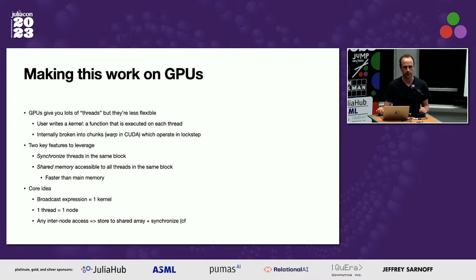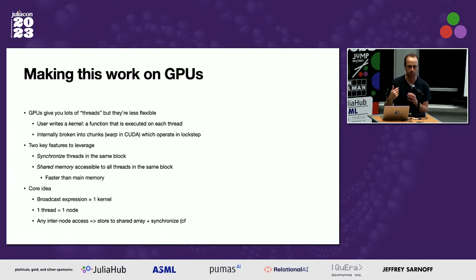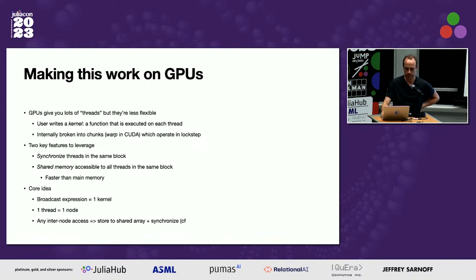There are two key features we can leverage. First, we can synchronize threads — synchronize all threads within a block. Second, we have access to shared memory: memory accessible to all threads in a block, faster than main memory, a temporary scratch space that is actually shared. The core idea is: a broadcast expression becomes a single CUDA kernel — matching how CuArray broadcasting typically works. We use one thread per node within each element. Whenever we have any inter-node access — like a matrix multiply — we store all the inputs to shared memory, then synchronize.